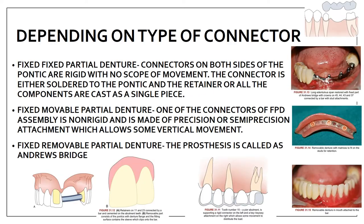Starting with the first one — depending on the type of connector — it is classified into three types: fixed-fixed partial denture, fixed-movable partial denture, or fixed-removable partial denture. In a fixed partial denture, the components are: retainers, the middle one is the pontic, and the connector joins the pontic and the retainer. In fixed-fixed, the connector on both sides of the pontic is rigid with no scope of movement — either soldered to the pontic and retainer, or all components are cast as a single piece.